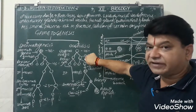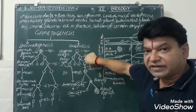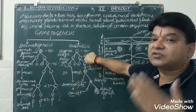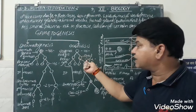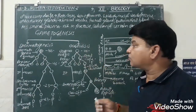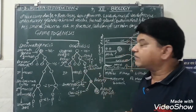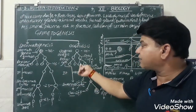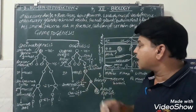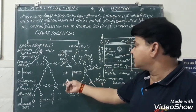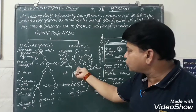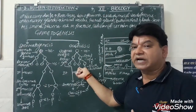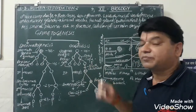During fetal life, whenever the female fetus is inside the mother's womb, it consists of oogonia. These oogonia undergo meiotic division, and primary oocytes are formed after the first meiotic division. This occurs during fetal life. At the time of birth and childhood, the primary oocytes are formed.